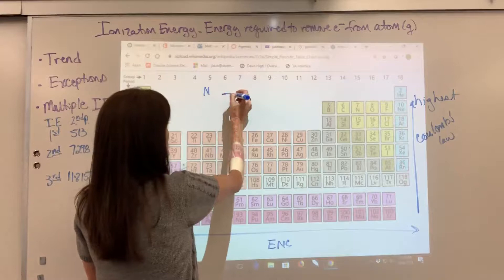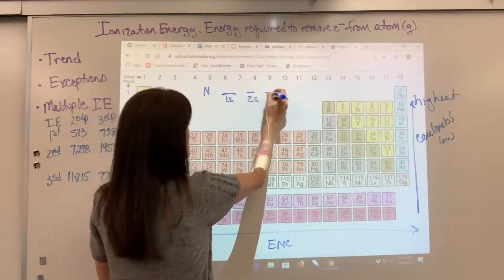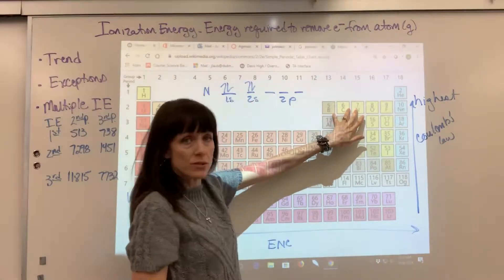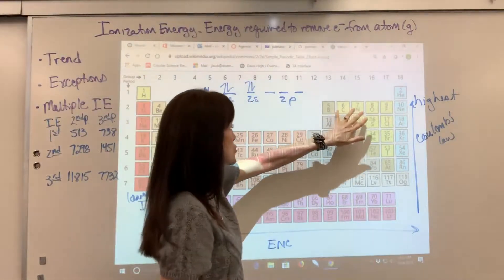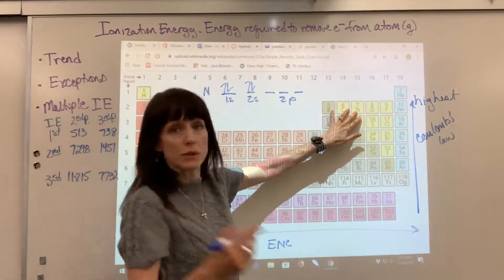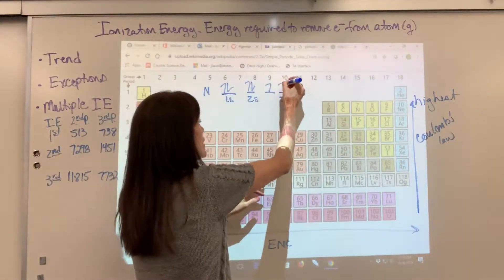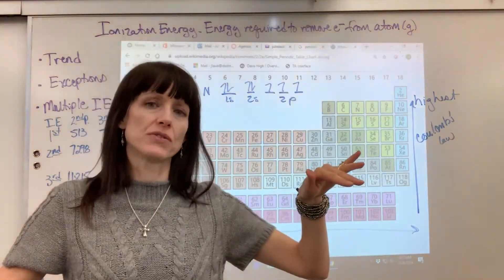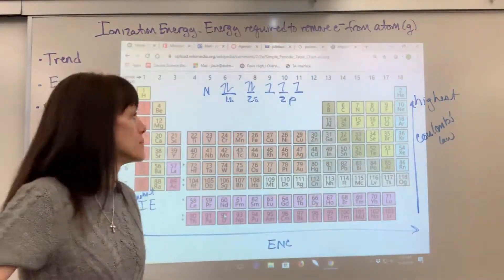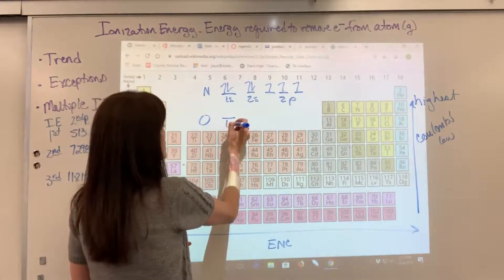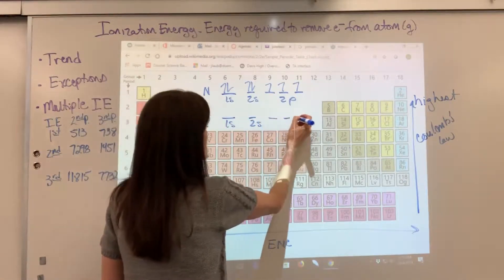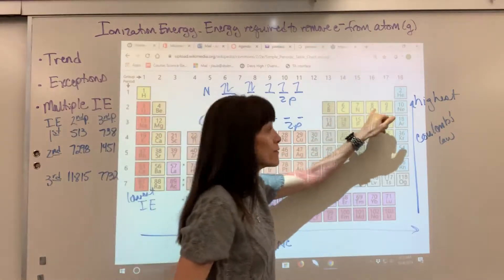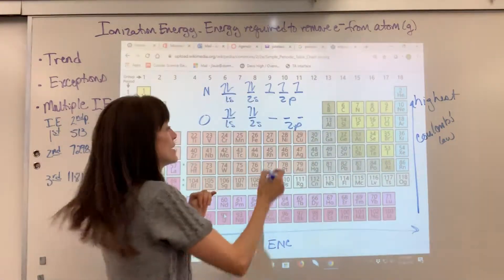Let's do orbital notation for both nitrogen and oxygen. Nitrogen is going to be 1s, 2s, 2p — three electrons in the 2p subshell. By Hund's rule, we put one electron in each orbital; electrons fill individually and then go back and double up. For oxygen: 1s, 2s, 2p — four electrons in the 2p subshell — so up, up, up, and then we go back and double up.